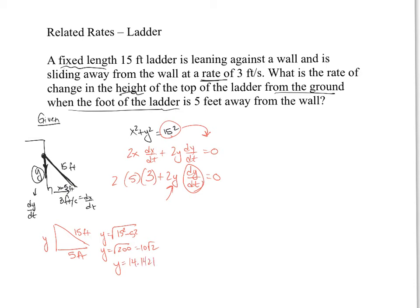So let's substitute all our values in. Over here, we're going to end up with, let's finish it right up over here. We've got a little bit more room. This ends up being 5 times 2 is 10. So 30 plus 2 times 14.1421 dy dt equals 0.